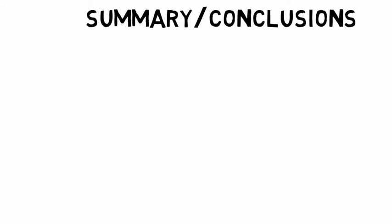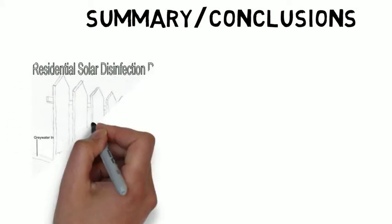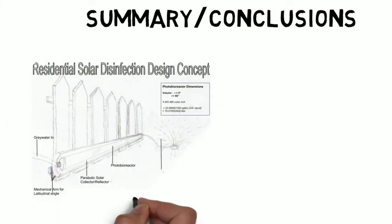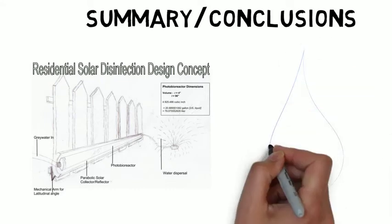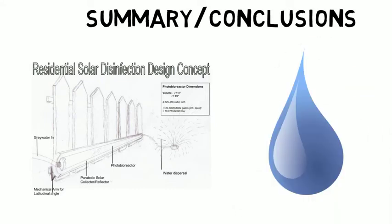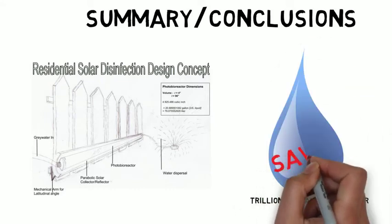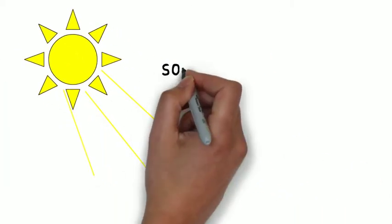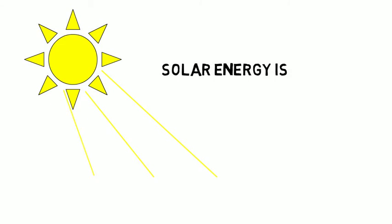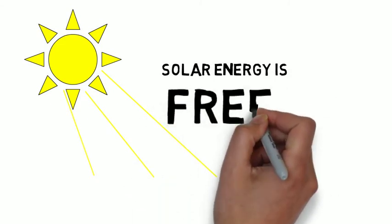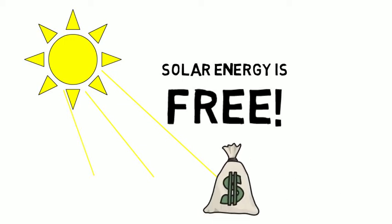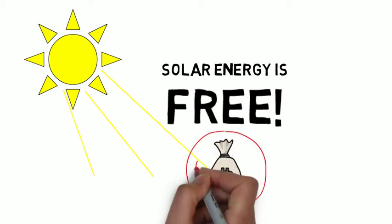The expansion of the solar disinfection method of gray water has the ability to save the United States trillions of gallons of water per year. Solar power, which is the energy source on which this system would operate, is free in comparison to energy costs required to operate other residential water disinfection systems.